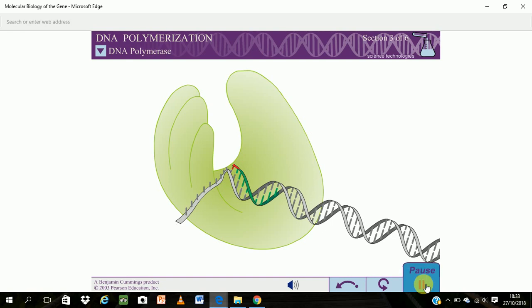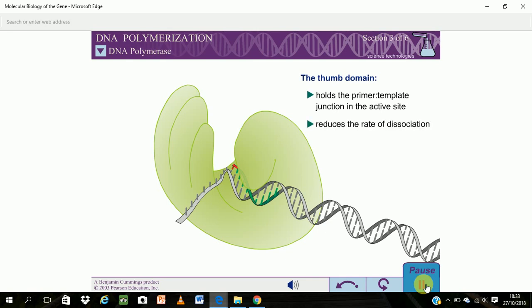In contrast to the fingers and the palm, the thumb domain is not intimately involved in catalysis. Instead, the thumb interacts with the DNA that has been most recently synthesized. This serves to maintain the correct position of the primer template junction in the active site and reduce the rate of dissociation of the polymerase from the DNA substrate.